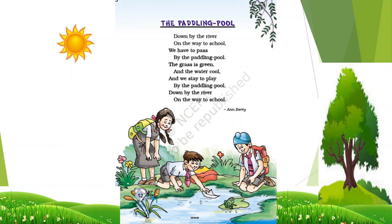The poet is Anbury. Now let's try to understand the meaning of the poem. Down by the river, on the way to school, we have to pass by the paddling pool. So the children are saying that on their way to school, there is a river flowing and near to the river, there is a pool.